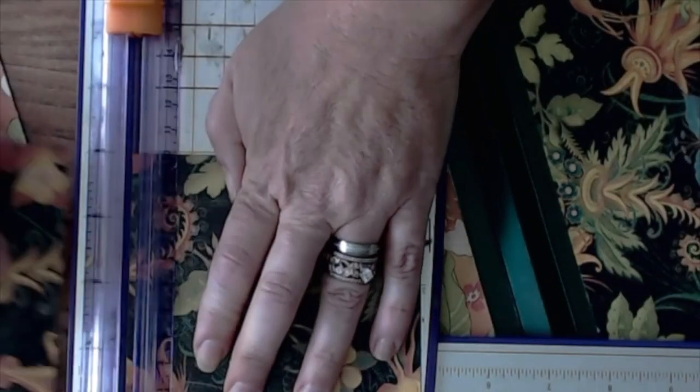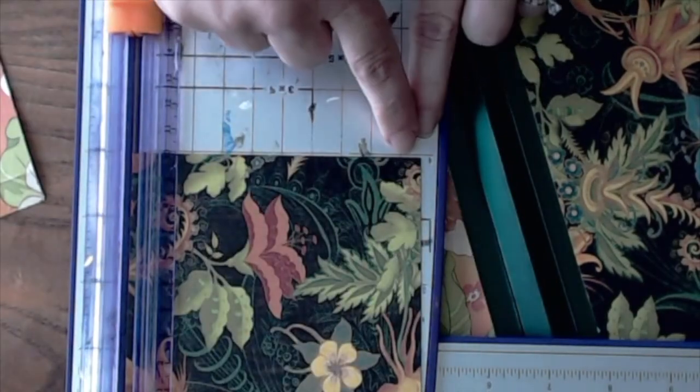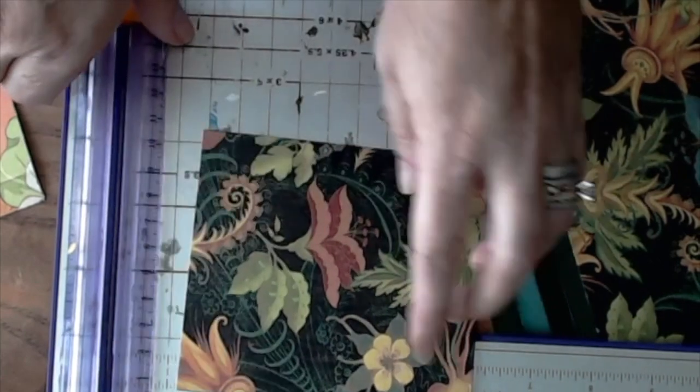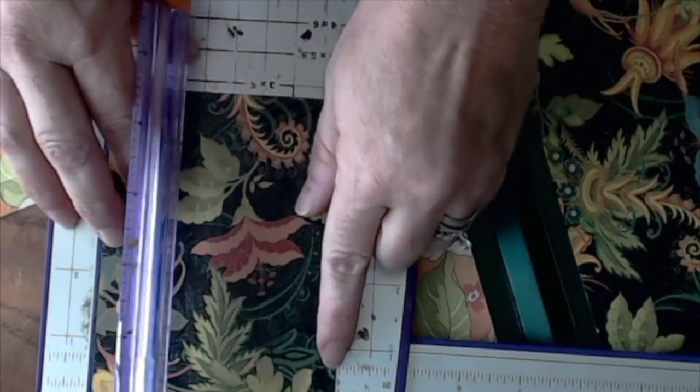Cut an additional piece of coordinating paper. Use the patterned paper four by five inches, ink the edges, and mount it at the bottom of the flip-up pages on the back cover.